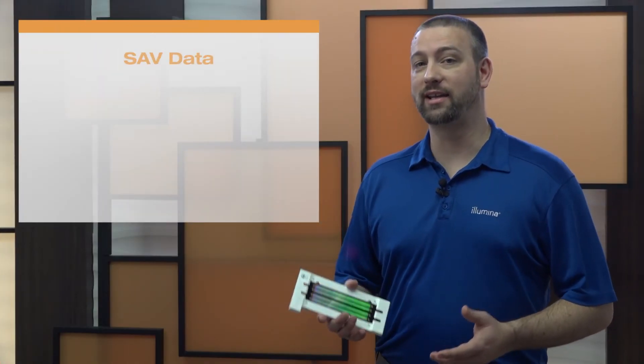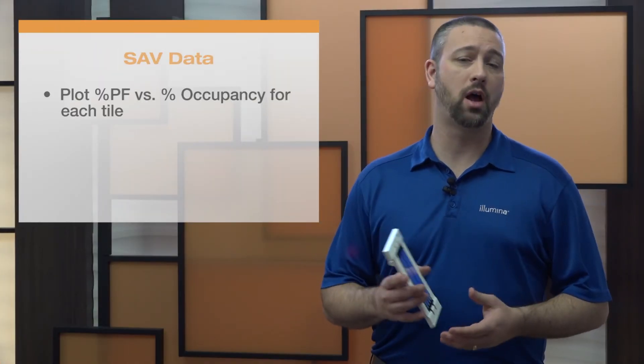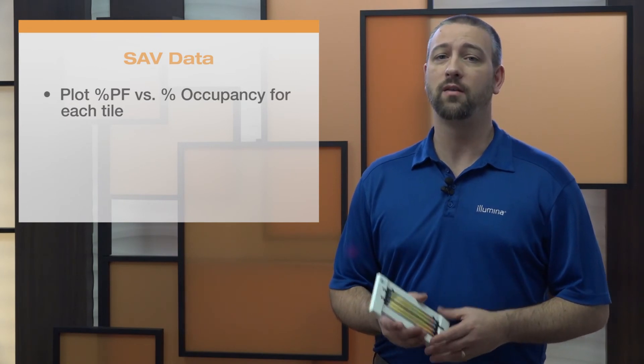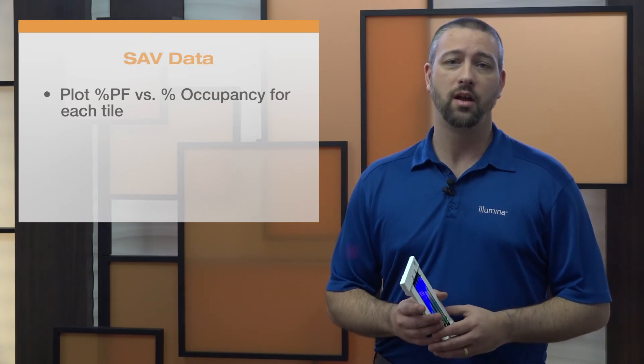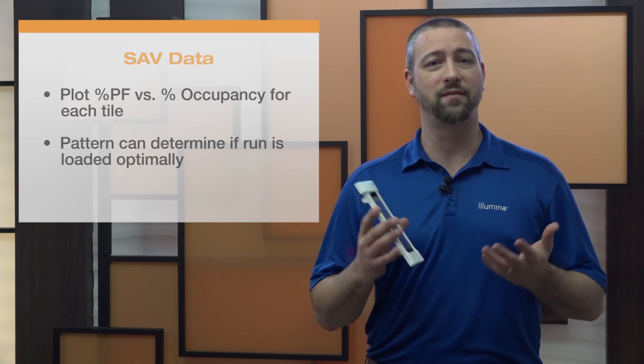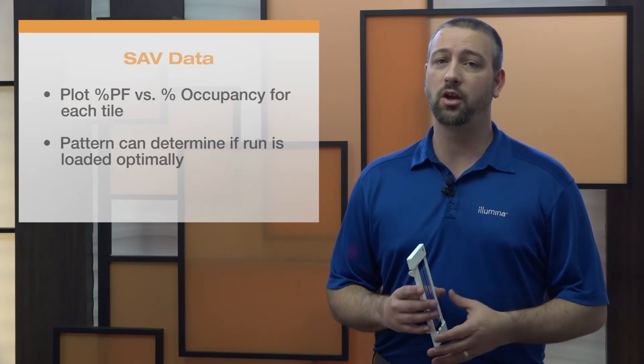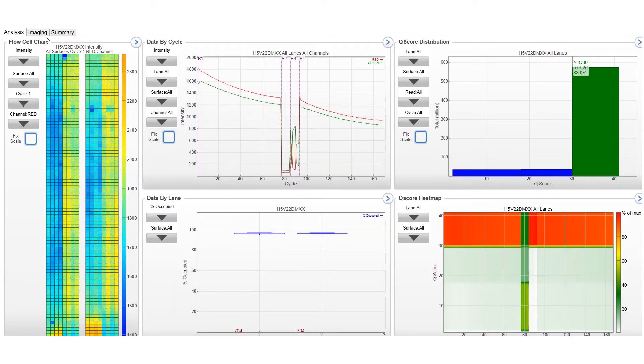When looking at data in SAV, users can create a plot of percent PF relative to percent occupancy for all the tiles on a flow cell. The shape of this plot can help identify if the run was underloaded, optimally loaded, or overloaded. Here's how to generate this plot.